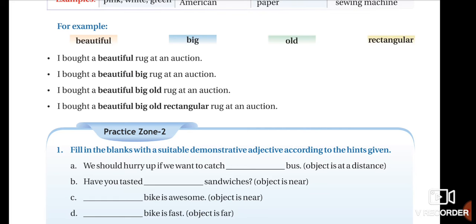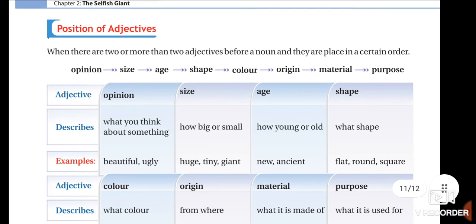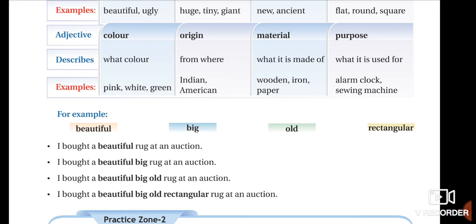In your book, they have given an example: 'I bought a beautiful rug at an auction.' That uses opinion first. In the second sentence, using both opinion and size: 'I bought a beautiful big rug at an auction.' Third: 'I bought a beautiful big old rug at an auction.' And last: 'I bought a beautiful big old rectangular rug at an auction.' This is how you write more than two adjectives in order.